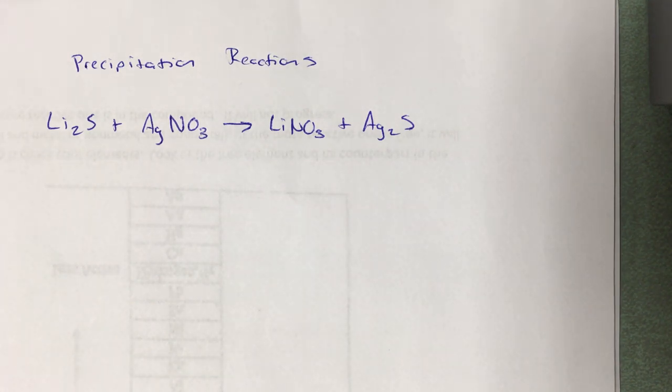All right, your identification of reaction type always starts with just the basic five: the synthesis, the decomposition, the single replacement, the double replacement, and the combustion.